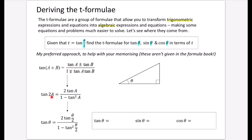Because the double angle formula says 2A, it's like saying A plus A. So it would be tan A plus tan A, which is 2 tan A on the numerator. On the denominator, because the addition formula goes plus-minus instead of minus-plus, we get a minus: it's tan A multiplied by tan A, which is tan squared A. So we end up with 2 tan A over 1 minus tan squared A.